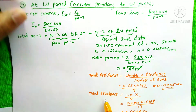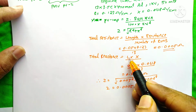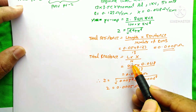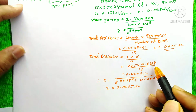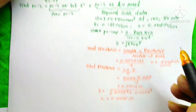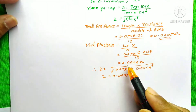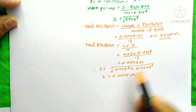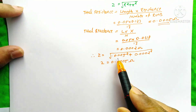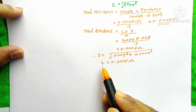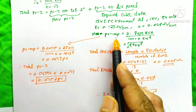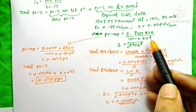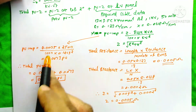The total reactance equals length of cable into reactance of cable divided by number of runs: 0.05 km into 0.0618 Ohm/km divided by 13, giving 0.0002 Ohms. The impedance Z equals root of 0.0005 squared plus 0.0002 squared, so Z equals approximately 0.0005 Ohms. Now we find the per unit impedance at the LV panel using Z into base kVA divided by 1000 into kV squared.